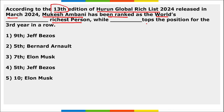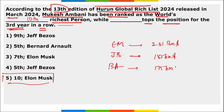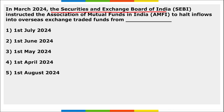According to the 13th edition of the Hurun Global Rich List released in March, Mukesh Ambani ranked as the world's 10th richest person, while Elon Musk topped the list for the third year in a row. Elon Musk's net worth is approximately $231 billion, followed by Jeff Bezos at $185 billion, and Bernard Arnault at $175 billion.